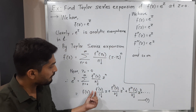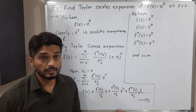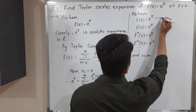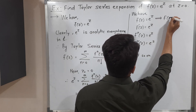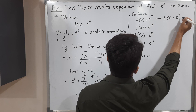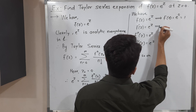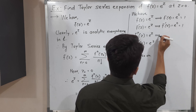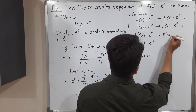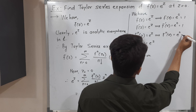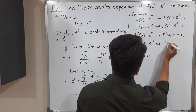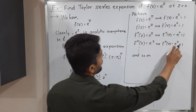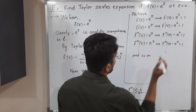Now we need to calculate the values of these higher derivatives at z = 0, meaning we substitute z = 0. So f(0) = e^0 = 1. f'(0) = e^0 = 1. f''(0) = e^0 = 1. f'''(0) = e^0 = 1. By putting z = 0, every derivative evaluates to 1, and this continues for all higher derivatives.